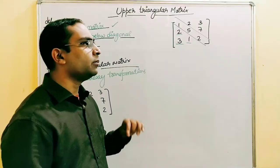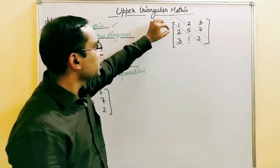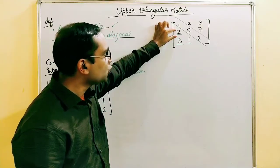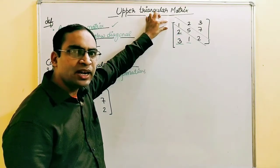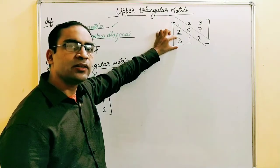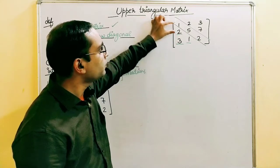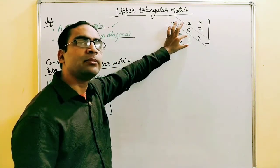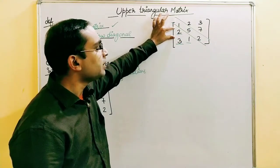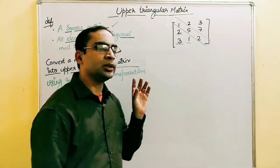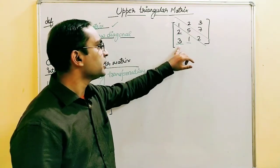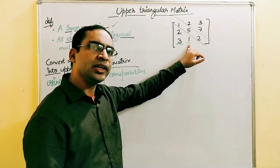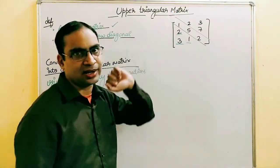Step three: the operation to zero out an element is always performed using the row whose number matches the column the element is in. So if you want to convert an element in column one to zero, you perform the operation using row one. If the element is in column two, you use row two. This ensures previously zeroed elements stay zero.